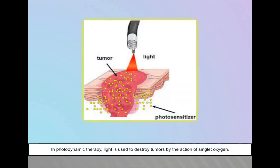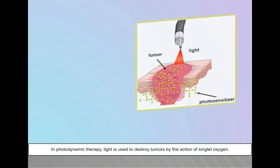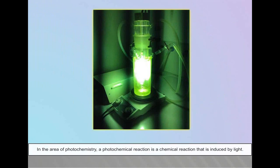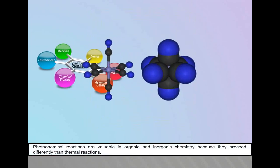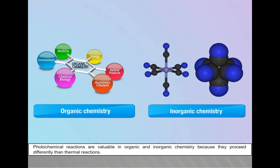In fireflies, an enzyme in the abdomen catalyzes a reaction that results in bioluminescence. Photochemistry can also be highly destructive. Medicine bottles are often made with darkened glass to prevent drugs from photodegradation. A pervasive reaction is the generation of singlet oxygen by photosensitized reactions of triplet oxygen. Typical photosensitizers include tetraphenylporphyrin and methylene blue. In photodynamic therapy, light is used to destroy tumors by the action of singlet oxygen. Photochemical reactions are valuable in organic and inorganic chemistry because they proceed differently than thermal reactions.